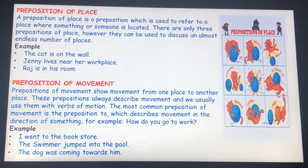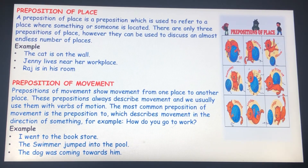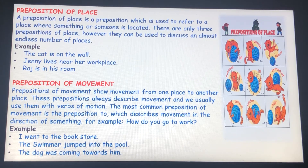I went to the bookstore. 'To' is used to indicate a destination. The swimmer jumped into the pool. 'Into' is used to tell a position in or inside something. The dog was coming towards him. 'Towards' specifies in the direction of somebody or something.